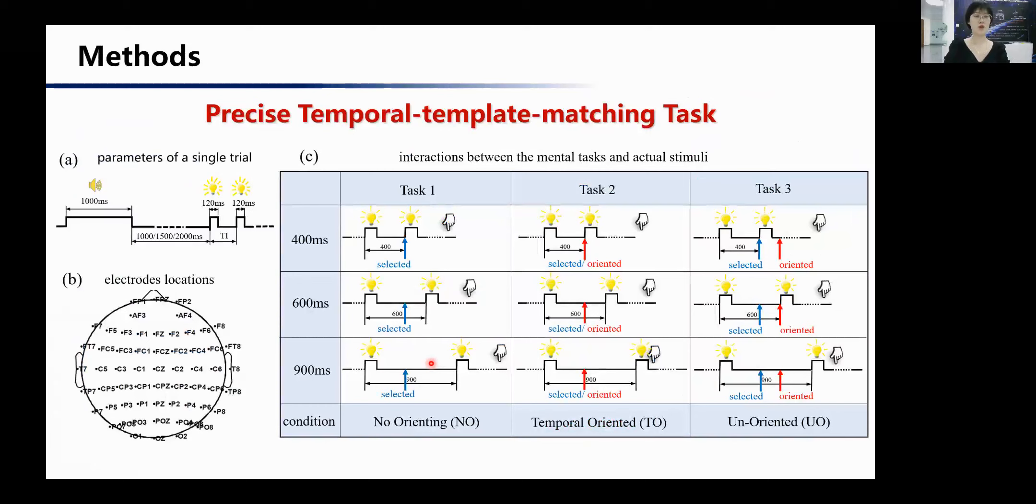To solve this problem, we designed a temporal template matching task in which the stimulus was double flash with 400, 600, or 900 millisecond single interval. Subjects were required to press the button as quickly as they can to indicate the onset of the second flash, whether it emerged at 400 millisecond or not, whether it emerged at 600 millisecond or not. According to this experimental design, Task 1 had no orientated moment.